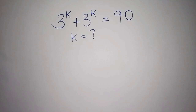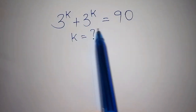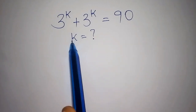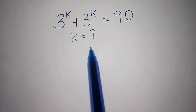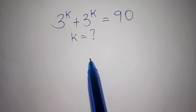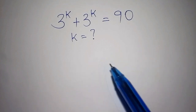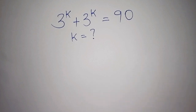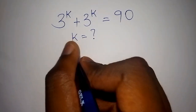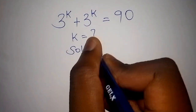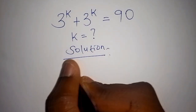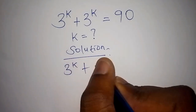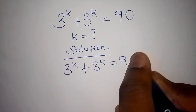Hello viewers, welcome to our maths channel. Today we want to solve one of the algebraic expressions. We have 3 to the power of k plus 3 to the power of k equals 90. We are asked to solve for the value of k. If you are good in algebra, you can work it out and comment your answers below, so that at the end we shall confirm the answers.